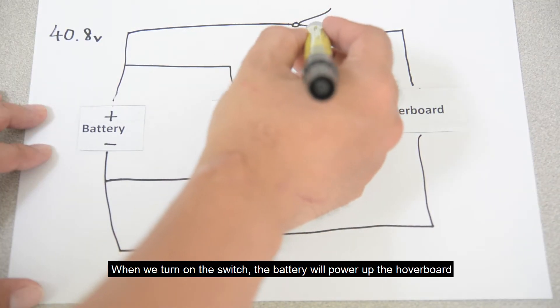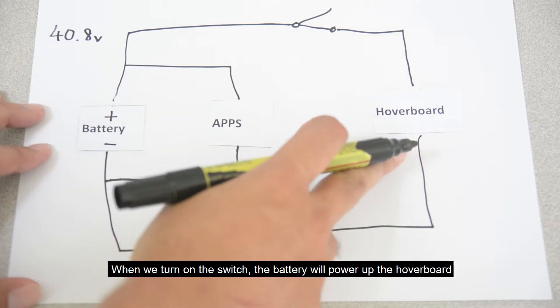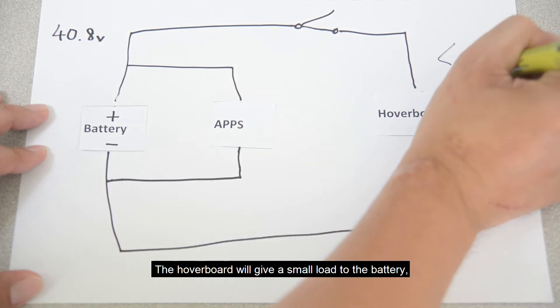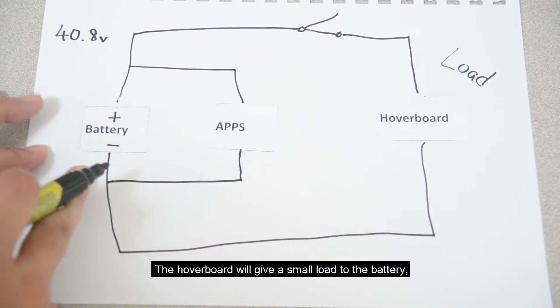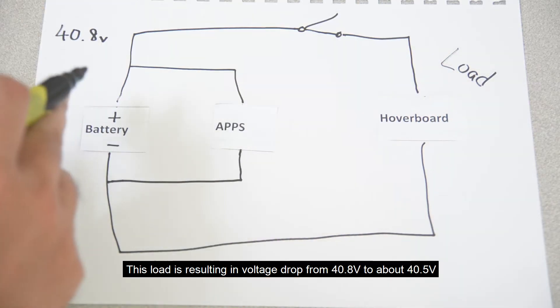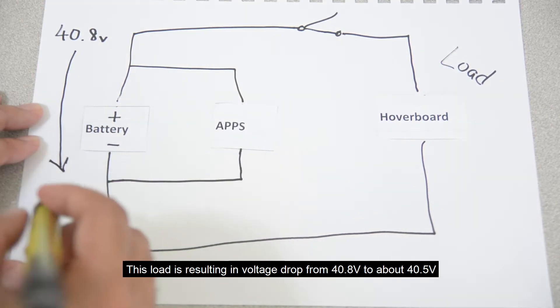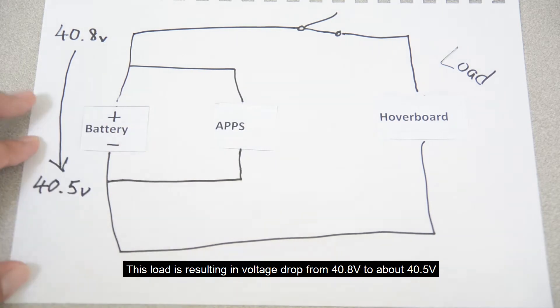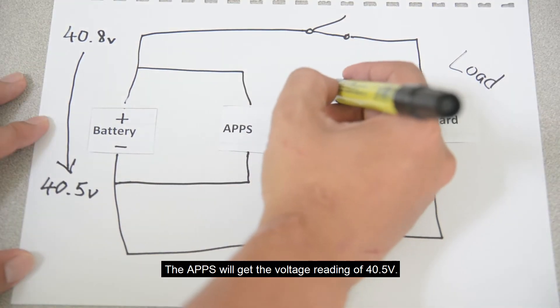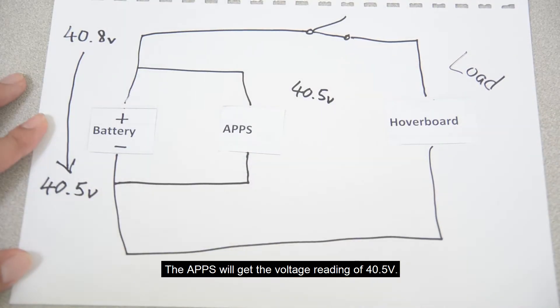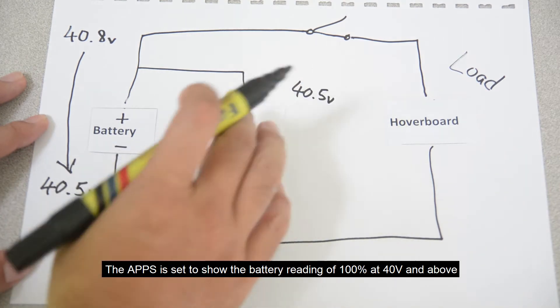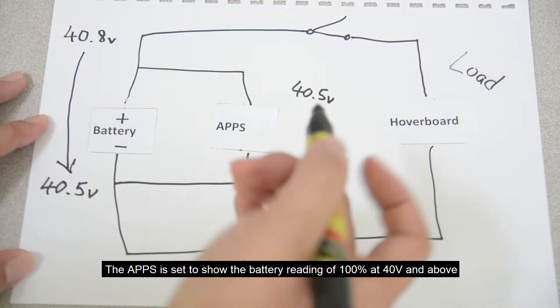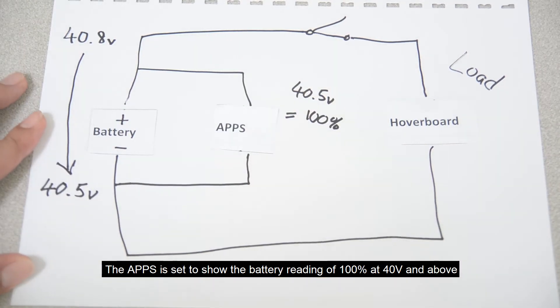When we turn on the switch, the battery will power up the hoverboard. The hoverboard will give a small load to the battery. This load results in voltage drop from 40.8V to about 40.5V. The apps will give the voltage reading of 40.5V. The apps is set to show the battery reading of 100% at 40V and above.